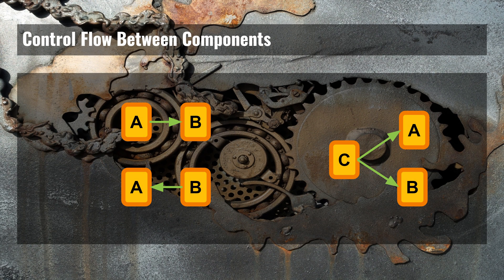The last element of structural software design as I see it is the control flow between the components. Even though there are not an infinite number of ways in which control can flow between your components, you will still often have at least a couple of different options. Looking at the example in this diagram, we have component A and component B, and you could decide to either have component A call component B, or have component B call component A, or you could add a third component C which first calls A and then calls B.